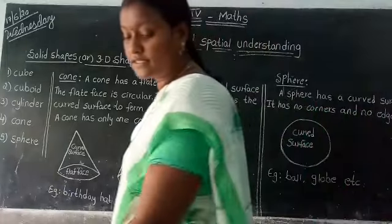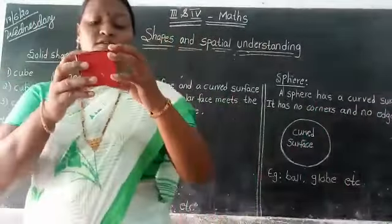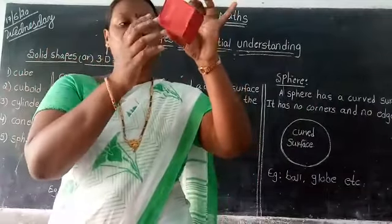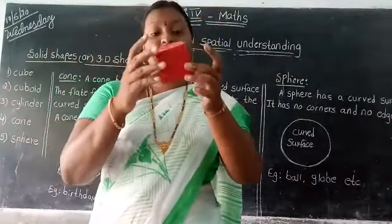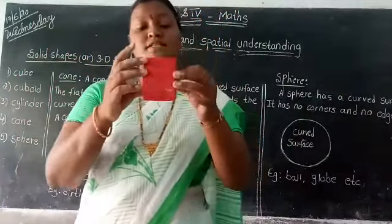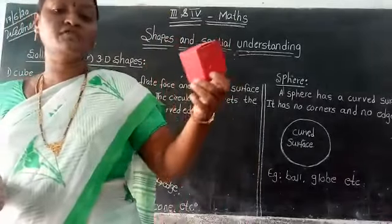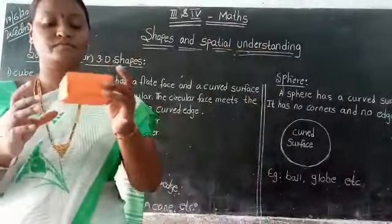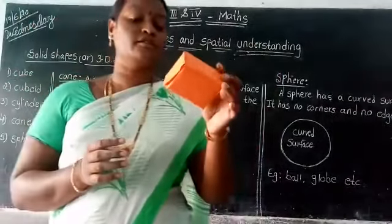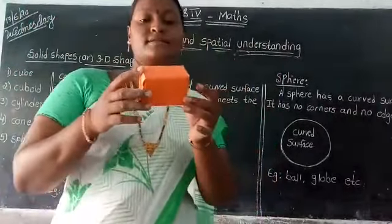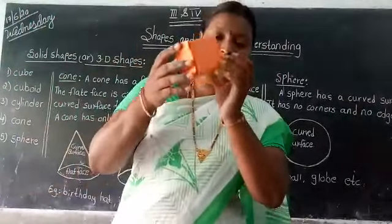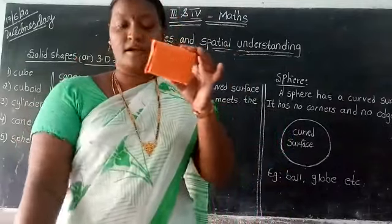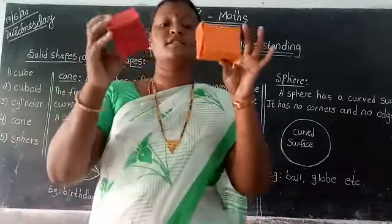This is a cube. A cube has 8 corners, 6 faces, and 12 edges. This is a cuboid. A cuboid also has 8 corners, 6 faces, and 12 edges.